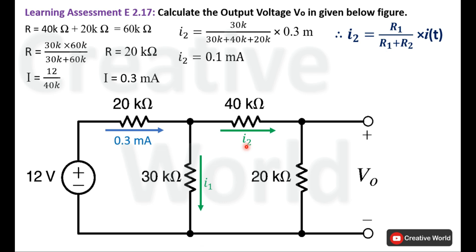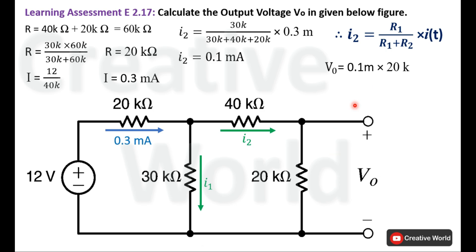We have calculated I2 = 0.1 milliampere, which flows through both series resistances. Using Ohm's law to find the voltage across the 20 kilo ohm resistance: 0.1 milliampere × 20 kilo ohm = 2 volts. This voltage is labeled V0, so V0 = 2 volts.